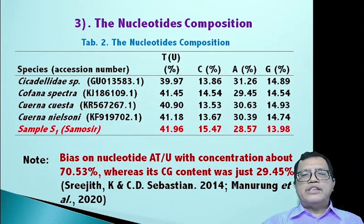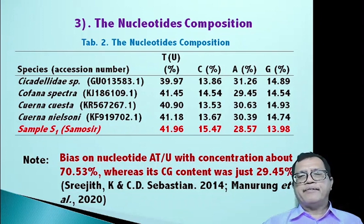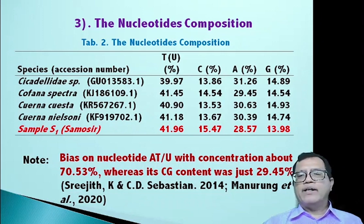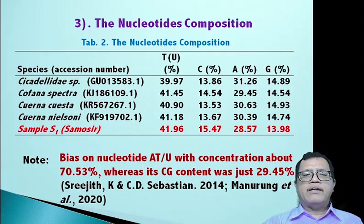Regarding the nucleotide composition of the white leafhopper from Samosir Island, the result shows the percentage of MTC01 DNA nucleotides: Thymine 41.96%, Cytosine 15.47%, Adenine 28.57%, and Guanine 13.98%. Based on this data, we can say that the nucleotide of the white leafhopper from Samosir Island is biased toward nucleotides Adenine-Thymine or Uracil.